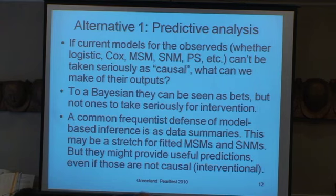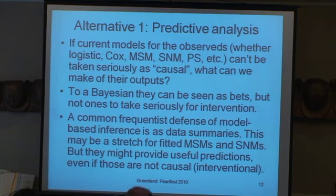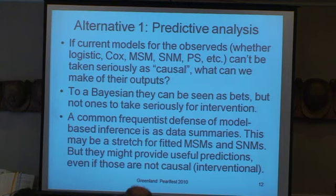There's a brewing controversy in epidemiologic methodology about causal modeling and causal analysis. Right now it's almost become a holy phrase that can pack a room at SER with overflow. And yet what's it producing for me as somebody involved in trench warfare involving lawsuits around pharmaceuticals and congressional hearings? The answer is almost nothing, because we don't have identification. If current models for the observed can't be taken seriously as causal, what can we make of their outputs?